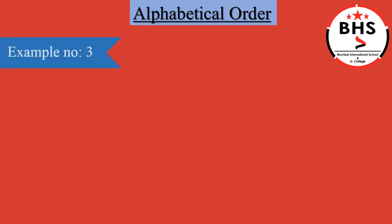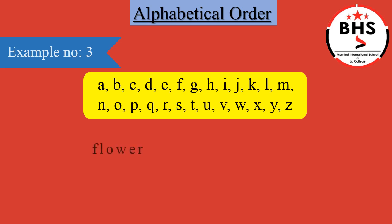Example Number 3. Let us start. Flower, zebra, crown. Now, again we have to look at the first letter of each word. The first letter of flower is F. The first letter of zebra is Z. Children, now you find which letter comes first in A to Z — F, Z, or C? Which letter comes first in A to Z? Yes, C. We have a word crown, which is starting with C.